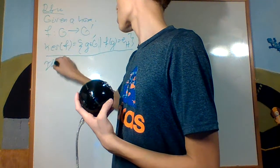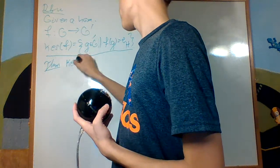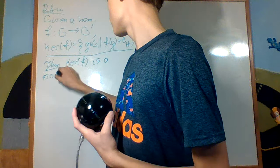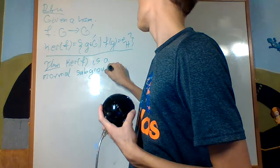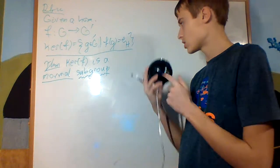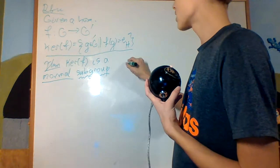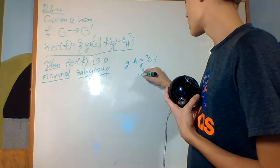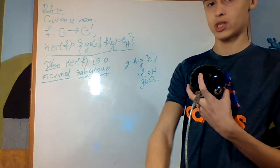Theorem: the kernel of F is a normal subgroup. Normal just means it's closed under conjugation, meaning G times H times G inverse is an element of H for all H in H and G in G, the general group.